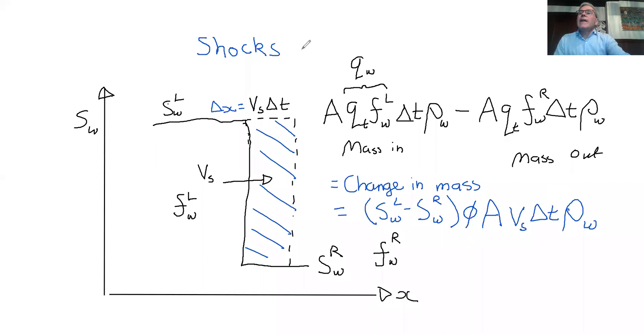So what we have here is this is the change in mass associated with a shock moving for a time Δt at a speed of V_S, because there's going to be this change in saturation. And this has got to be equal to the mass that flows from the left state, as it's called, to the left of the shock, and the mass that flows out from the right.